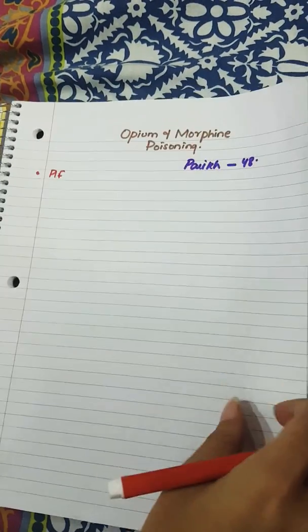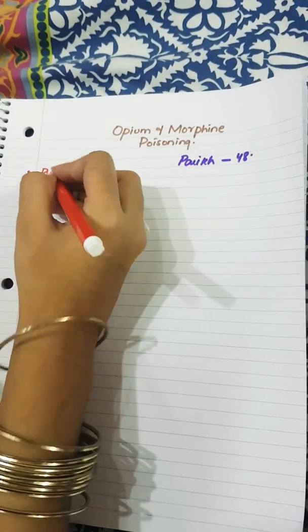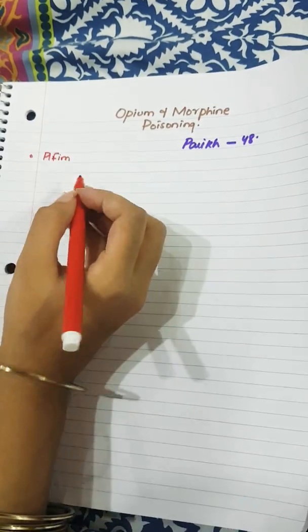Assalamu alaikum everyone. Today we are going to study opium and morphine poisoning. It is from Parikh page in chapter number 48. So we need to know that it is also known as afim.